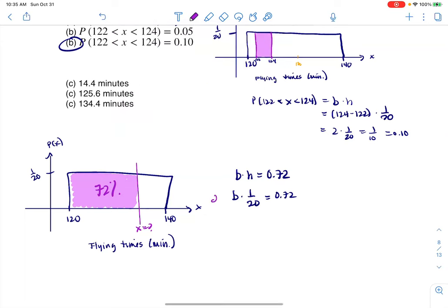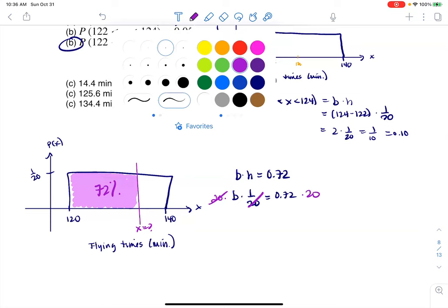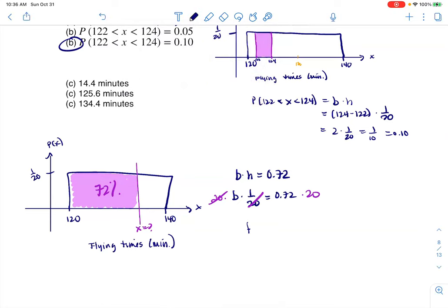And let me color code this. So I'm going to multiply this side by 20 and this side by 20. And these will cancel out. And that will leave me with just the base on the left-hand side. And 72% of 20 is 14.4. And then the units on this would be minutes. And I think a lot of folks would mistakenly circle this one. But keep in mind, your variable was uniformly distributed from 120 to 140. So flight times can't even be 14.4 minutes. It's not even in the range or in the spread of 120 to 140.